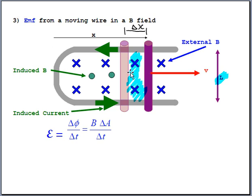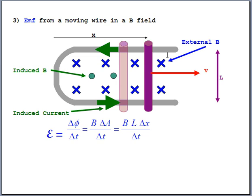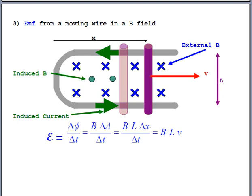That change in area — that little light blue area — would actually be just length times width: L multiplied by delta X. This comes from the old equation: negative N times change in flux over time, and it's slowly evolving into a new form. That change in X over change in time — think about the units — is meters per second, which is actually velocity: how fast the bar is cutting across all of those X's. So we've got a new version of the equation for generating voltage: BLV. It's the old one transformed, and it's a great equation to use when you just have a bar slicing across some magnetic field.